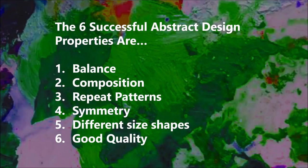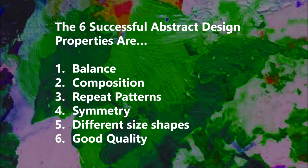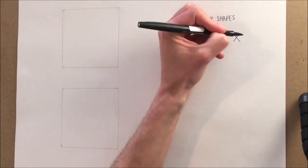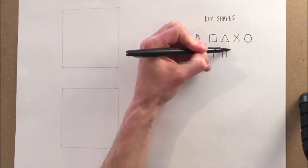Don't create a massive design — perhaps keep it square, 25 centimetres by 25 centimetres. You must remember these six key components to make your abstract design really successful: balance, composition, repeat pattern, symmetry, different size shapes, and good overall quality.